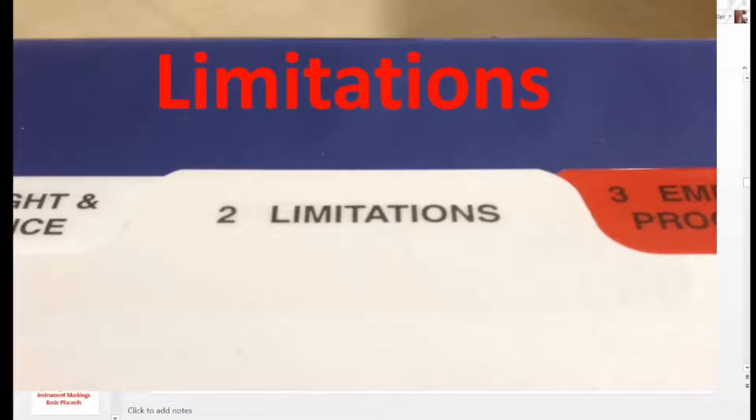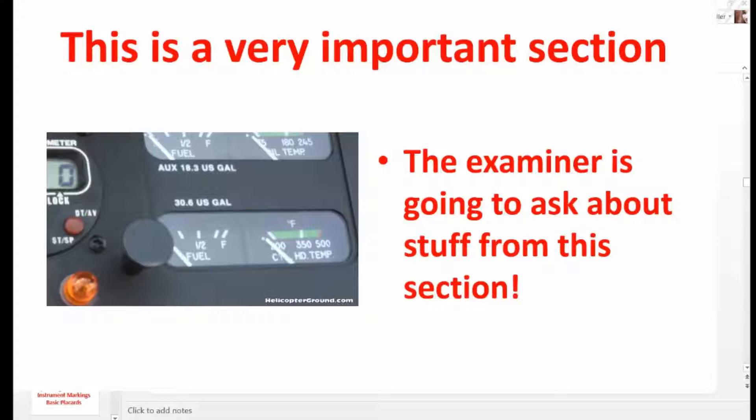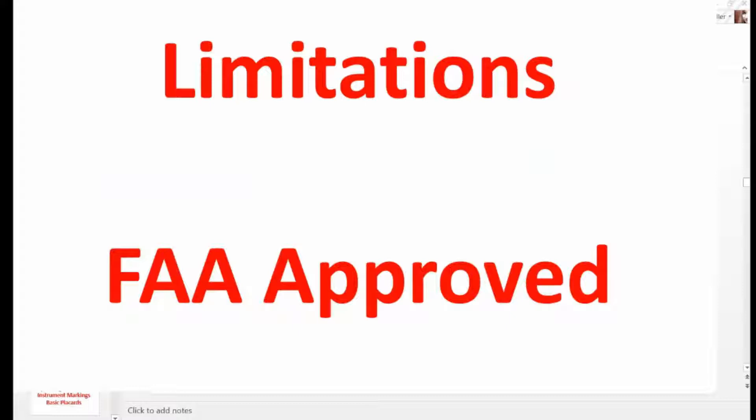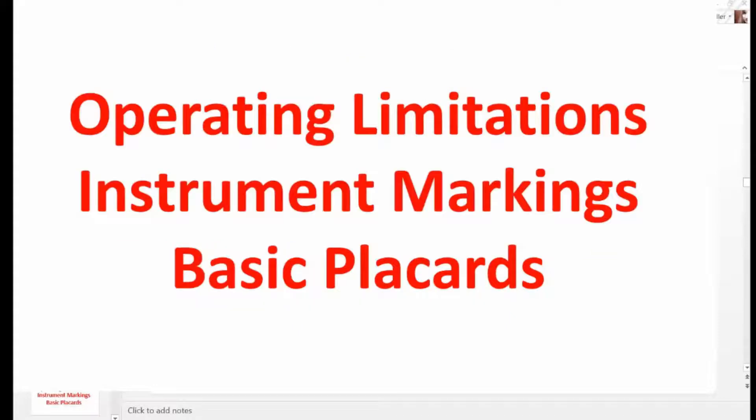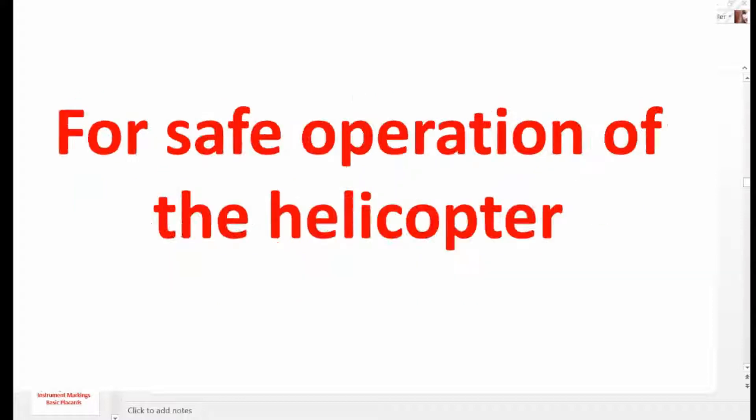So the limitations section is chapter two in the R44 POH. As I already stated, this is a very important section. The examiner is going to ask you stuff from this section. The limitations section is FAA approved and contains operating limitations, instrument markings, and basic placards that you're going to find in the aircraft. And these are all geared for safe operation of the helicopter.